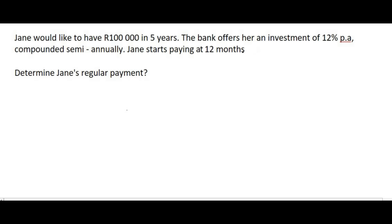So here's the last question for this video. We have a person called Jane who would like to have R100,000 in five years' time. The bank offers her an investment of 12% per annum compounded semi-annually. Jane starts paying after 12 months. Question is, determine Jane's regular payment.